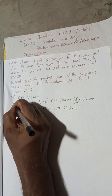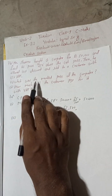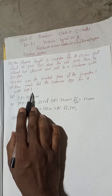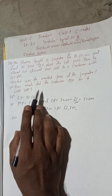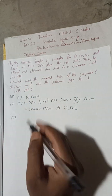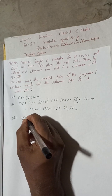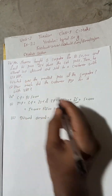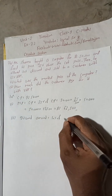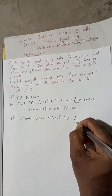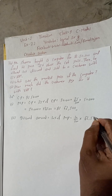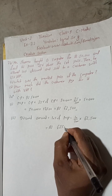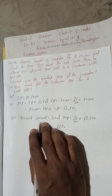Therefore the marked price of the computer is equal to Rs. 62,500. Now for number two — how much did the customer pay for it with VAT? To find that, we first calculate the discount amount because there is a 10 percent discount. Discount amount equals 10 percent of marked price: 10 divided by 100 into 62,500. Cancelling zeros, this gives Rs. 6,250.